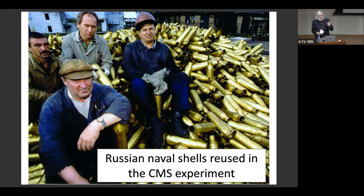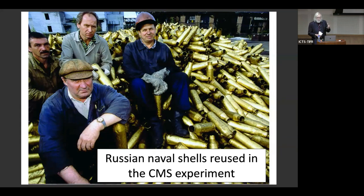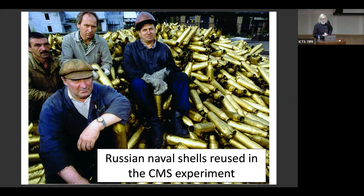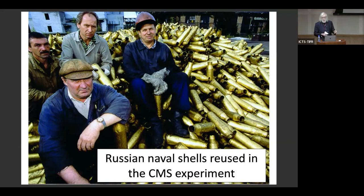I want to emphasize that this work was done not by CERN — it was done by an international collaboration of thousands of physicists working with CERN. This fantastic human achievement was made possible by global international collaboration. One example: these are cartridges from Russian naval shells which were melted down and converted into components of the CMS detector. A lot of that work was done in Belarus and was financed by the United States. This is the sort of international collaboration which made possible the achievements of particle physics.